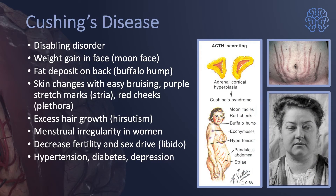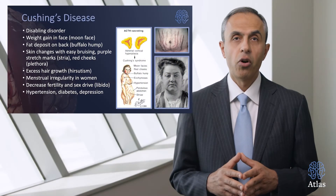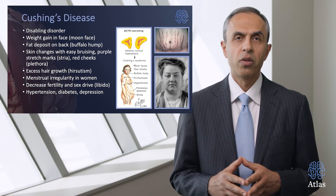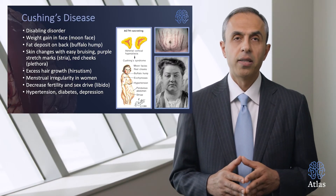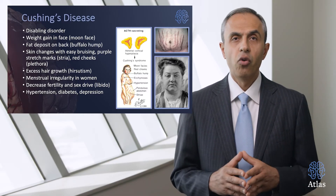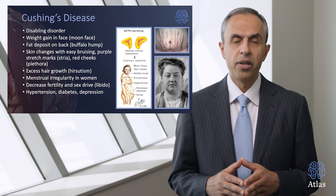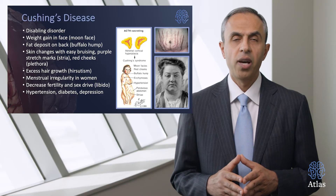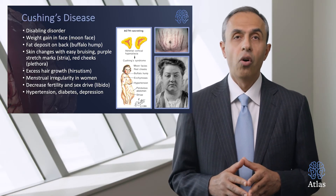Another disabling disorder that is very much underdiagnosed is Cushing's disease. It can be very disabling — it causes significant weight gain especially in the face, leading to what we call 'moon face,' as you can see in these images. There's also a fat deposit on the back called a 'buffalo hump.' Skin changes include easy bruising, purple stretch marks called striae, and red cheeks or plethora. Excess hair growth in women, menstrual irregularities, decreased fertility and libido, hypertension, diabetes, and depression are also quite common.